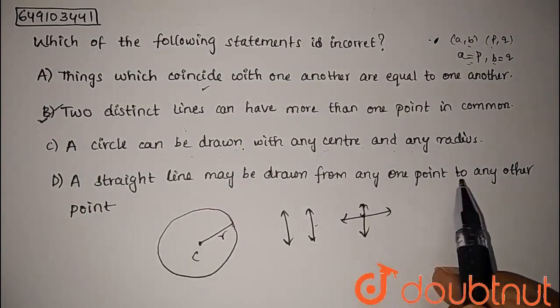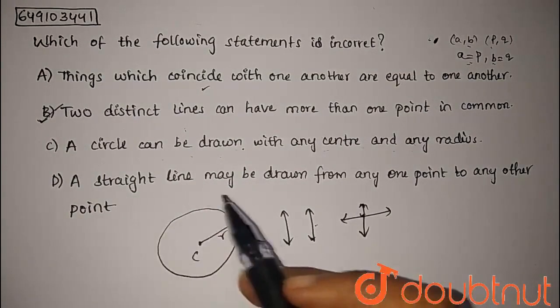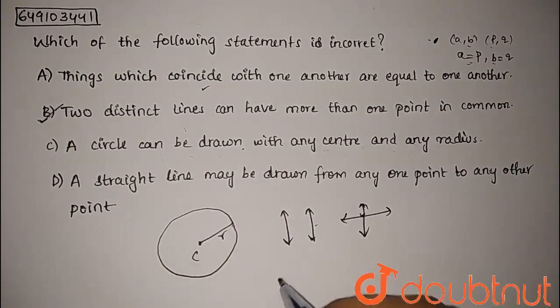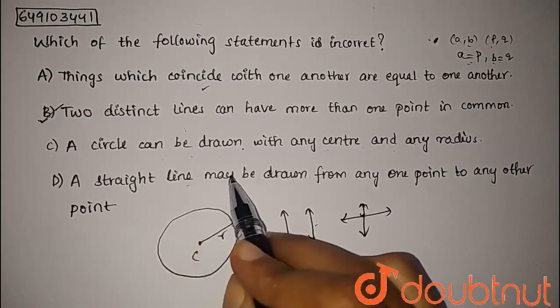The fourth statement: straight lines may be drawn from any one point to any other point. The straight line's definition is that it joins both points. That's why this statement is also right.